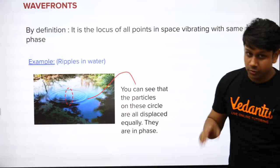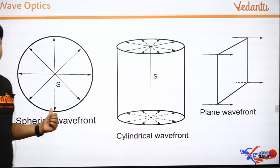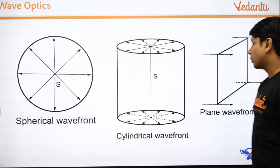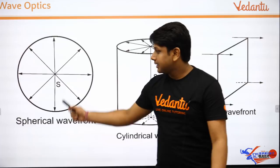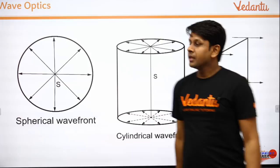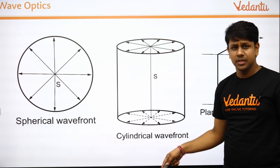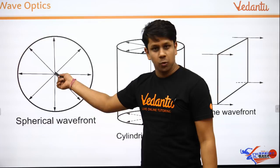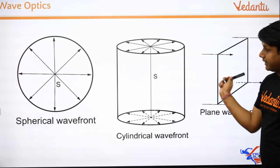This definition is important to write in exams — giving this example will impress the examiner. Now, there are three types of wavefronts to study: first is spherical wavefront, which is produced by a point source of light. Second is cylindrical wavefront, produced by a line source of light. Third is planar or plane wavefront, produced by a parallel beam of light.